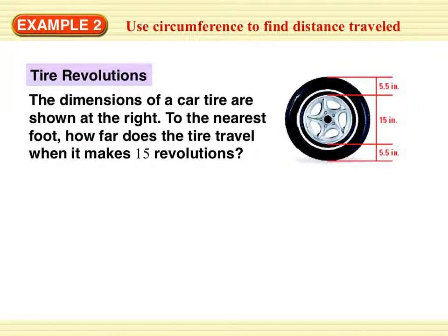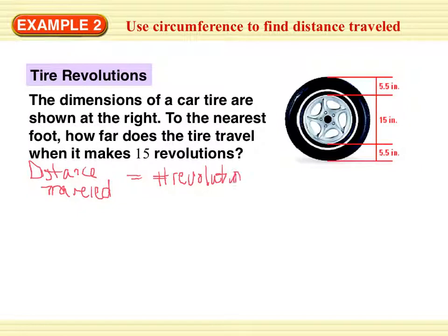Tire revolutions. Dimensions of a car tire are shown. To the nearest foot, how far does the tire travel when it makes 15 revolutions? Write this down in your notes: distance traveled equals number of revolutions times circumference.